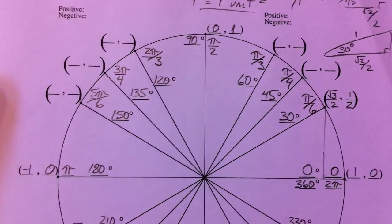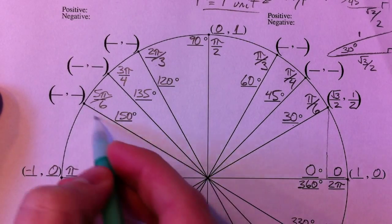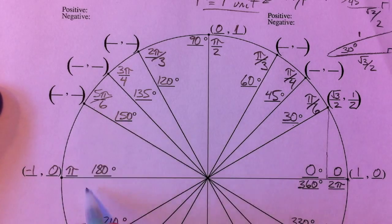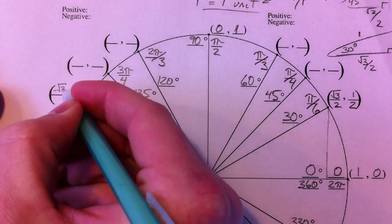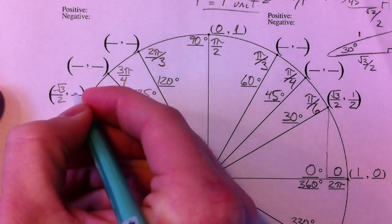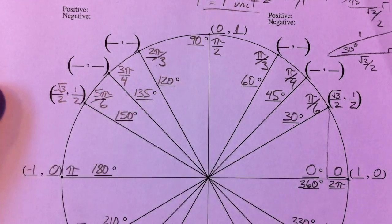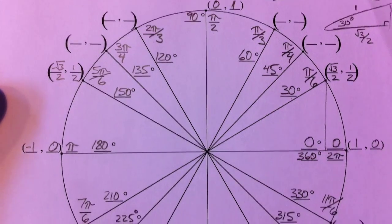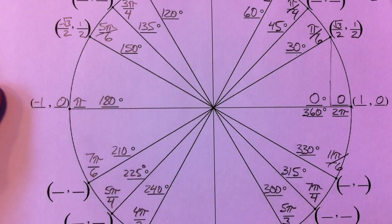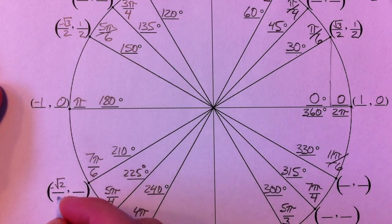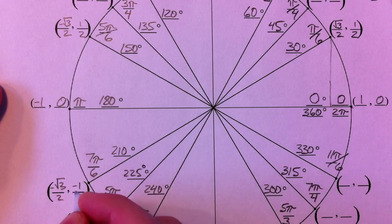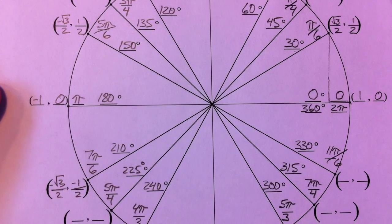What I want to do now is notice this triangle over here is the same as that, except the x is going to be negative, and the y is going to be the same. Notice that this triangle down here is going to have the same x, negative root 3 over 2, and also have a negative y value.